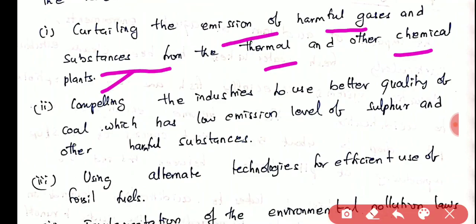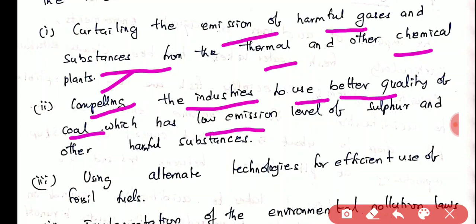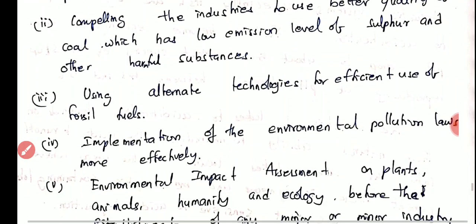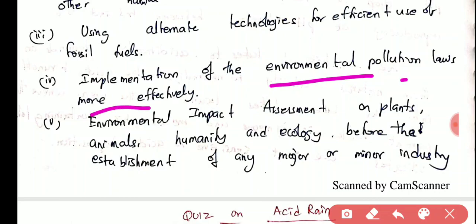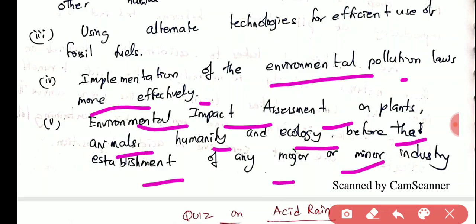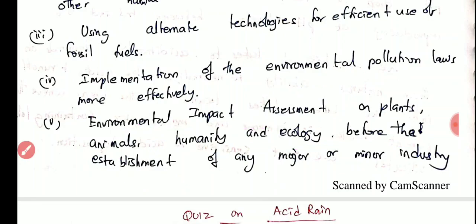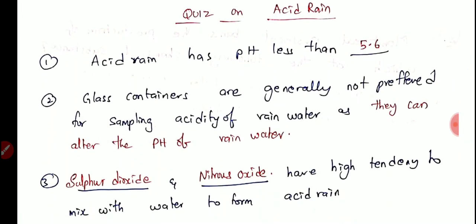We have to reduce harmful gas emissions from thermal and chemical plants. Pressure should be built upon industries to use better quality coal that emits low levels of sulfur and other harmful substances. Other measures include using alternate technologies for effective use of fossil fuels and implementation of environmental pollution laws more effectively, along with environmental impact assessment on plants, animals, humanity, and ecology before the establishment of any major or minor industry.